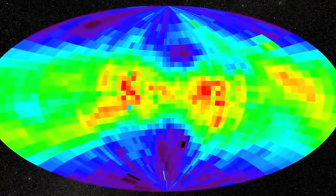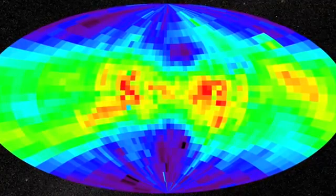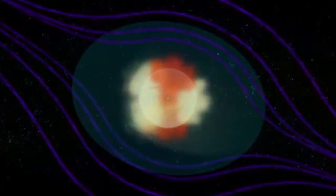Based on the map of the heliotail, if we could look straight down the tail, we would see a shape a little like a four-leaf clover.